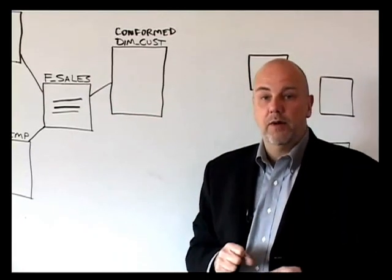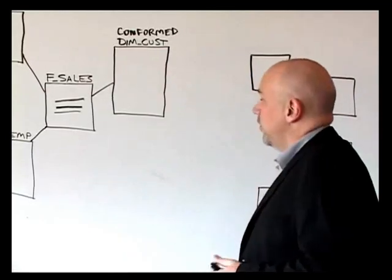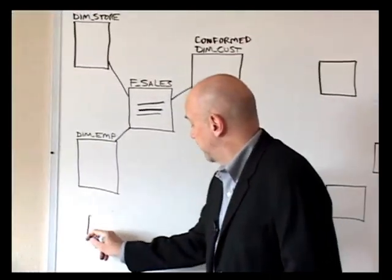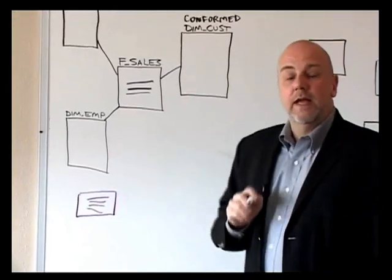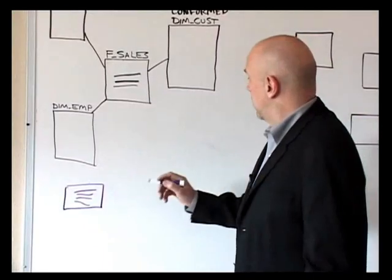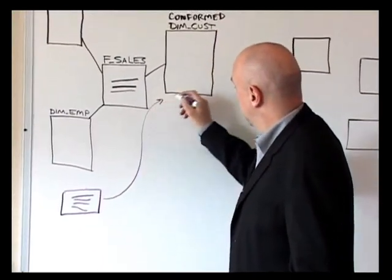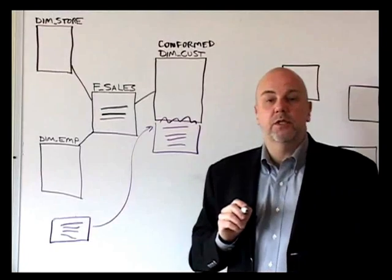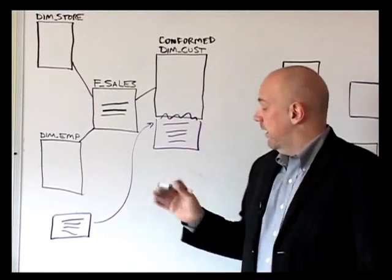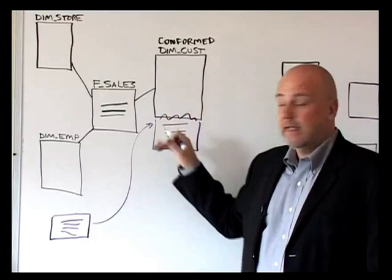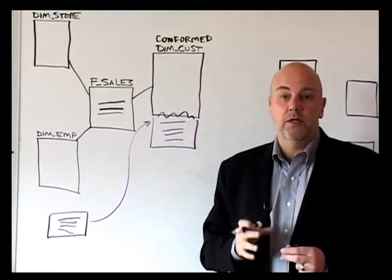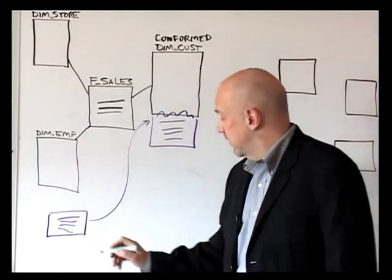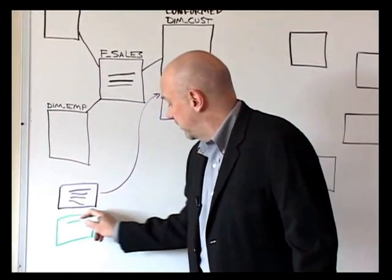But what happened in practice is that a new set of sources come into my enterprise warehouse layer, and they actually include some additional context that also helps to define the concept of customer. So what I do is I take that information and I attach it to this customer concept. Because this is a conformed dimension, I've got additional attributes and context to define the concept of customer. I'm going to bring those in. But then, a little while later, we're going to have some more information that comes in from yet another source.